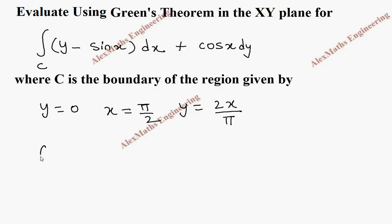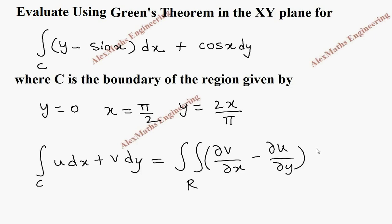By Green's theorem, we have integral over c, u dx plus v dy, equal to double integral over the region r, dou v by dou x minus dou u by dou y, into dx dy.